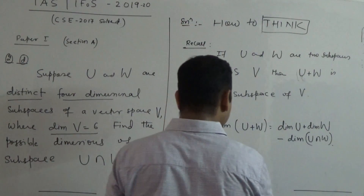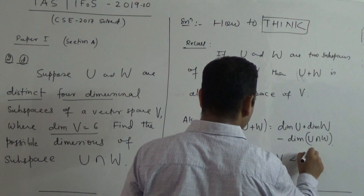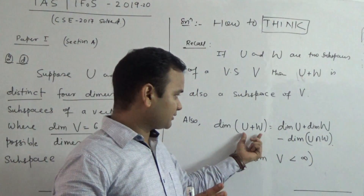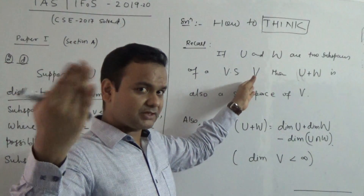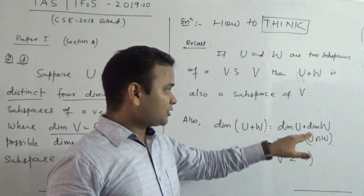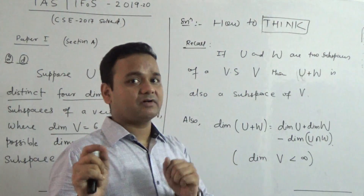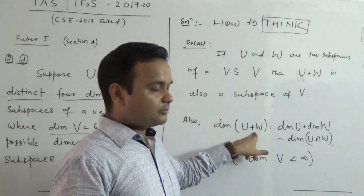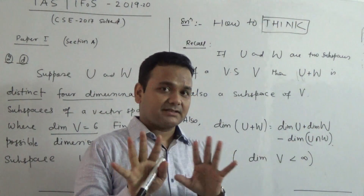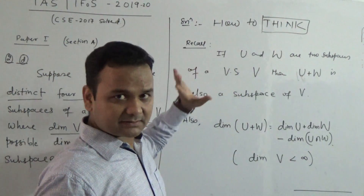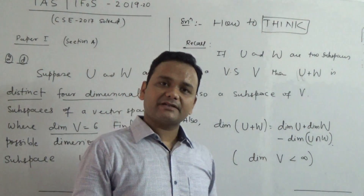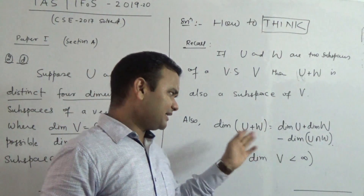This dimension formula makes sense provided the dimensions are finite. If you are working over a finite dimensional vector space, then all subspaces are also finite dimensional, and we can apply this formula. People often write this formula but sometimes forget this condition — infinity minus infinity is indeterminate. So you must mention that the dimensions should be finite.